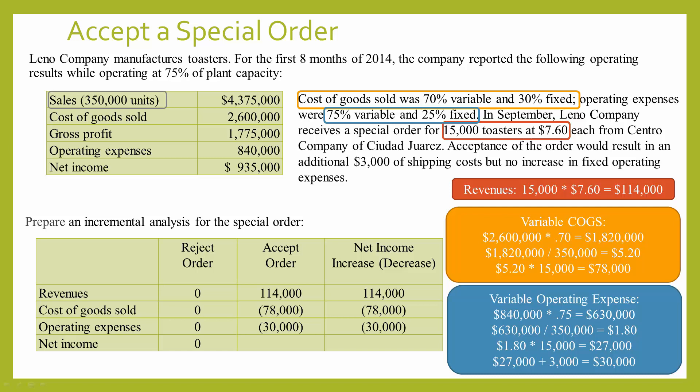Now we can do the math and see that if they accept the order, their net income would actually increase by $6,000. Since this is a positive number, they would accept the order. And that's a good overall example of the analysis for accepting or rejecting a special order.